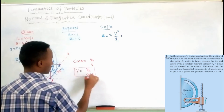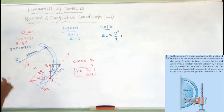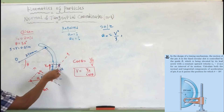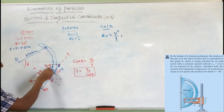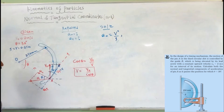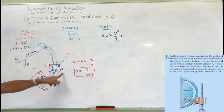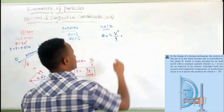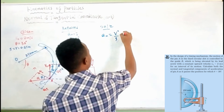We don't need the opposite side velocity or speed. We only need the tangential direction speed or velocity. So we already found v, so we can substitute in this place.